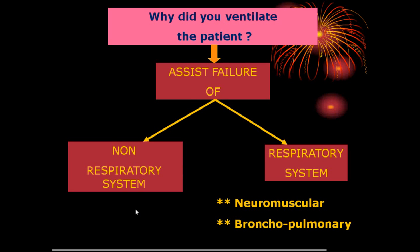In another way, the reason a patient is put on the ventilator may be a problem in the respiratory system itself — neuromuscular, bronchopulmonary, or something outside (non-respiratory). It is the failure of the respiratory system to satisfy the metabolic requirement of the body, or to maintain the integrity of CO2 and pH — as in metabolic acidosis, heart failure, or something like that.